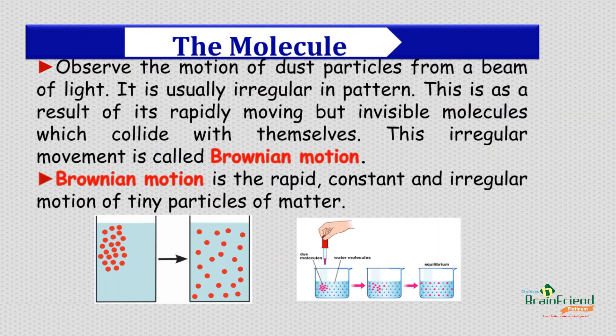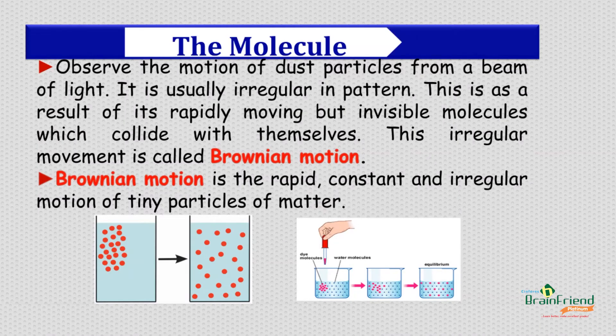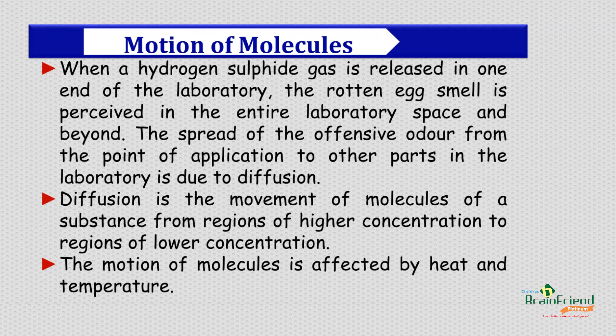Now let's talk about the movement of molecules. The particulate nature of matter can be shown with three evidences, one of which is Brownian motion. If you observe dust particles in a beam of light, you discover that these dust particles have random movement or random motion. This is what Brownian motion is about. In the same way, molecules of matter move randomly. From our figure here, you can see particles of a given element spreading as a result of constant, irregular motion, because they have a wider space to occupy.